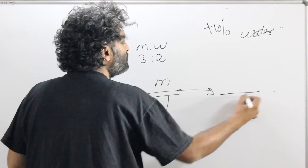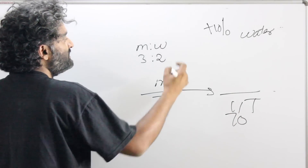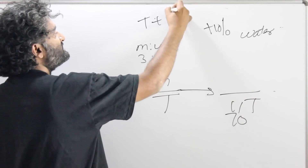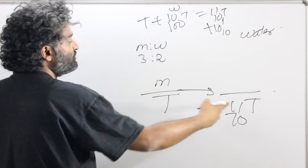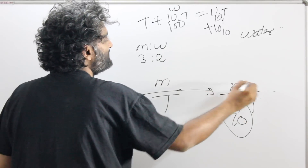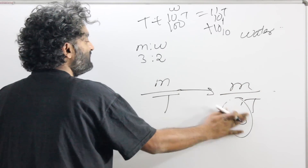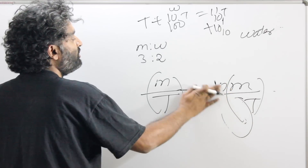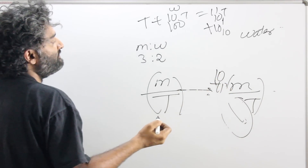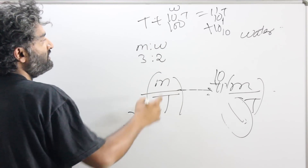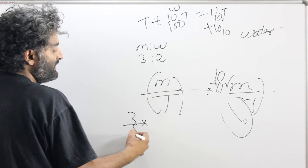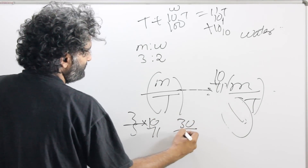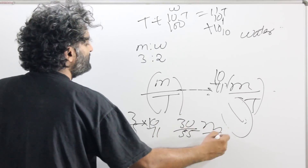Initially the ratio was milk/total. The volume has been increased by 10%, meaning total has been multiplied by 11/10 — because total was T, increased by 10% gives T + 10% of T = 11T/10. So total increased by 10% and milk has not changed. Since 11/10 is in the denominator, it flips up, making the overall multiplying factor for milk/total equal to 10/11. We had 3/5 as milk/total, multiplied by 10/11, giving 30/55 as the new milk/total.